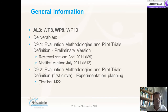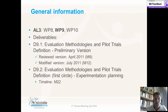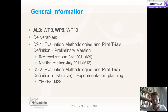Generally speaking, Work Package 9 is located within Action Line 3 — Requirements Elicitation, Experimentation Planning and Implementation of the Evaluation. The deliverables are two: D9.1, Evaluation Methodologies and Pilot Trials definition, in a preliminary version and then in a modified version delivered at month 12; and D9.2, the Evaluation Methodologies and Pilot Trials definition and Experimentation Planning, delivered for the first cycle evaluations at month 22.